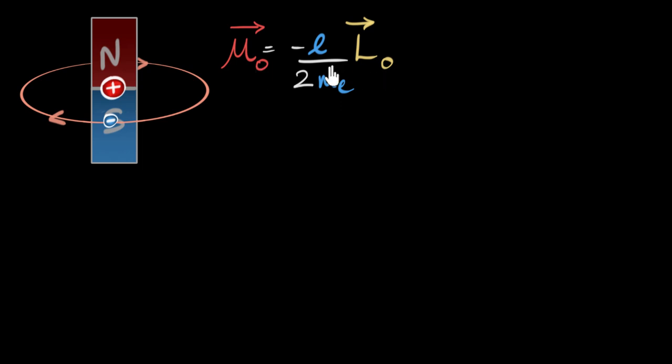The reason why I'm putting an O over here is to remind us that this is due to the orbital motion. Because along with that, we also saw electrons tend to have a spinning motion, spin angular momentum. Although they're not really spinning around their own axis, we can think of it that way. And that generates an additional spin magnetic moment, which we're not gonna talk about too much in this video.